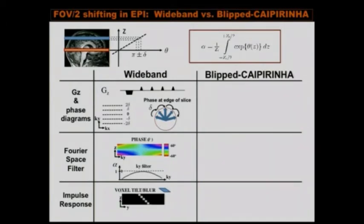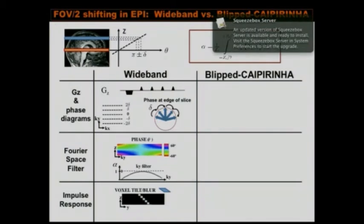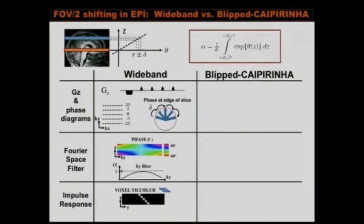In the impulse response domain, taking a Fourier transform along ky gives a delta response at the center where there's no phase roll, but shifted deltas at the top and bottom edges due to linear phase rolls in opposite directions, causing a voxel tilting effect. Integrating this up along the slice direction yields a blurring kernel. For typical imaging where slices are about 4 cm apart, the voxel blurring artifact from the wideband approach is around 3 to 4 voxels wide — very significant — which is why people don't really use this method.